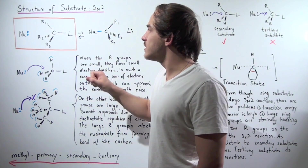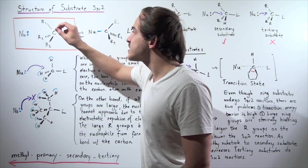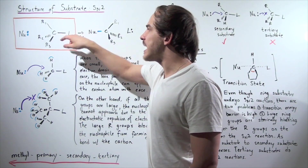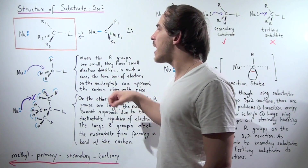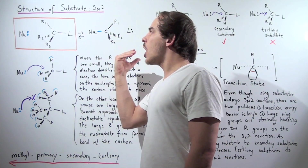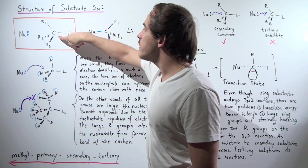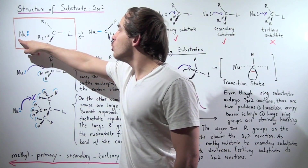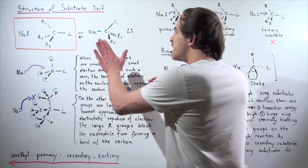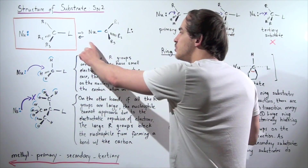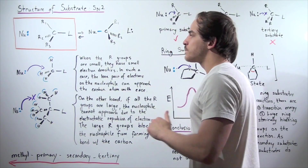When this lone pair of electrons attacks and bonds to this carbon, it displaces this pair of electrons along with our leaving group. So our leaving group gets kicked off and the nucleophile forms a bond with our carbon. We have a Lewis base-acid reaction. These are our two products: our new substrate and our leaving group which was kicked off.